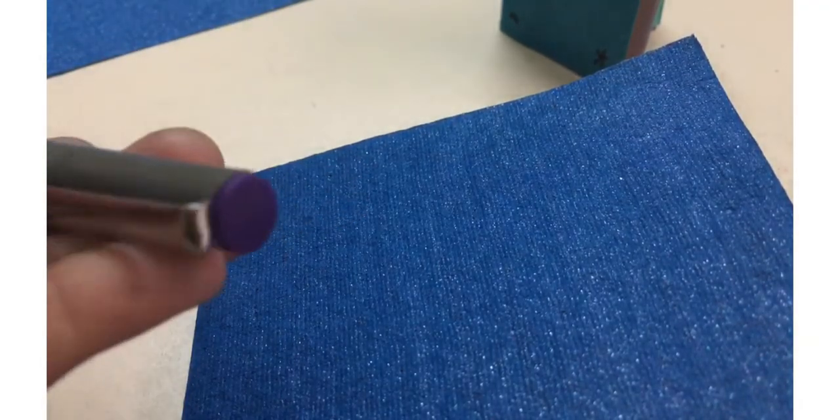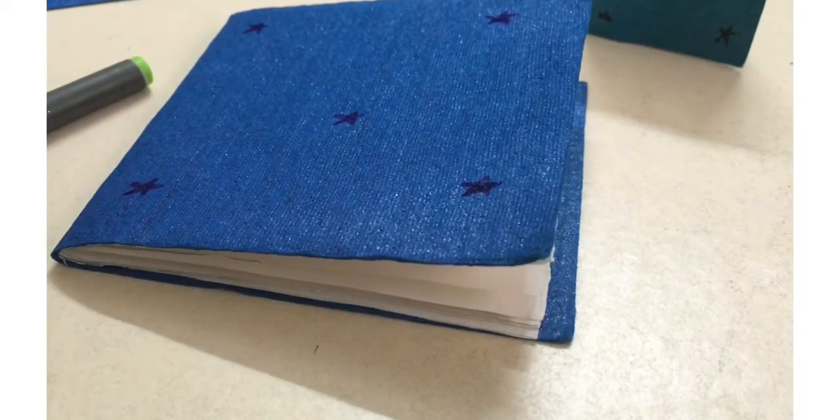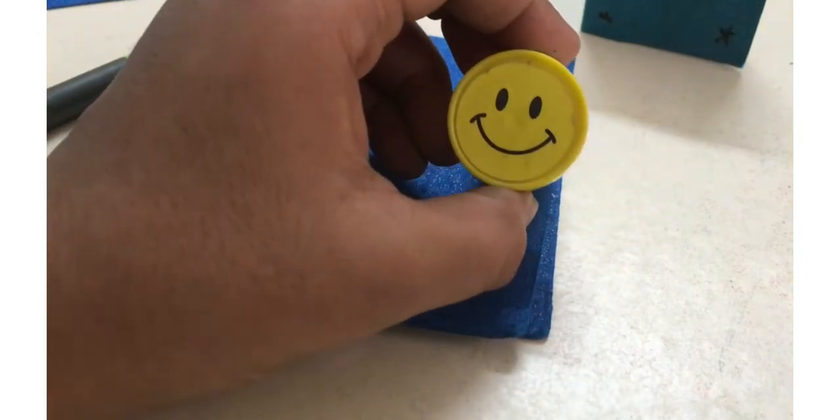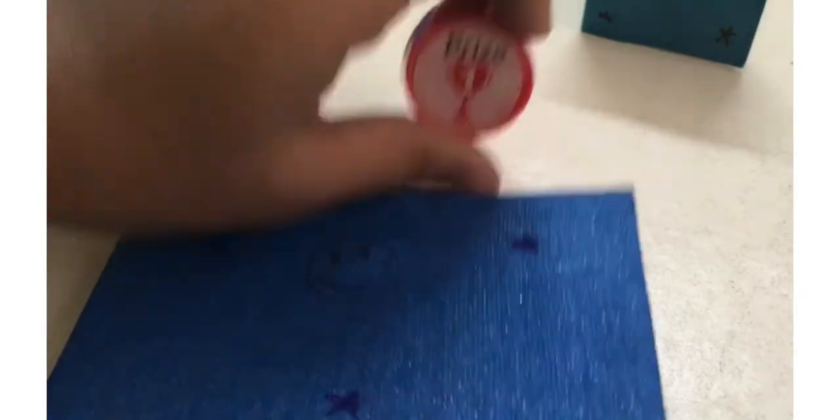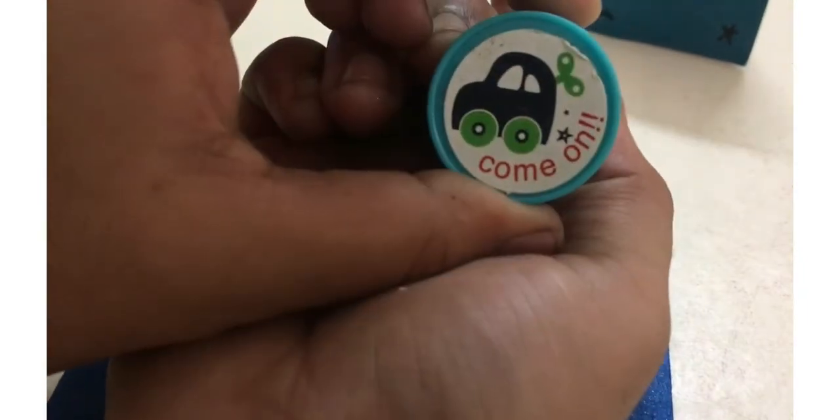For decoration, you can use a dark color pen and draw a few stars. You can use stamps. Here I am using a smiley face and a common stamp.